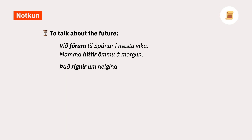In these first two sentences, we could in fact use ætla: Við ætlum að fara til Spánar í næstu viku and Mamma ætlar að hitta ömmu á morgun. Because these sentences are about people's plans, however, we can't really say ætla rignir, so we use the simple present instead. Note that ætla rignir is not technically incorrect — it just doesn't mean 'it's going to rain'; it means something more like 'I suppose it's going to rain.' So for now, avoid using ætla for anything other than plans, as the usage of ætla rignir is quite nuanced.